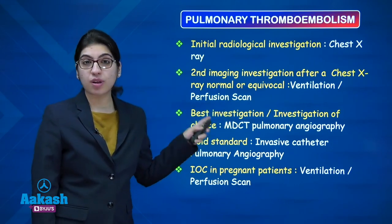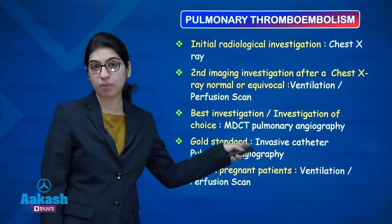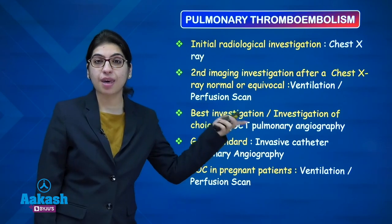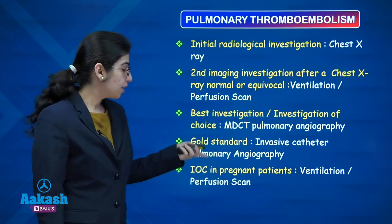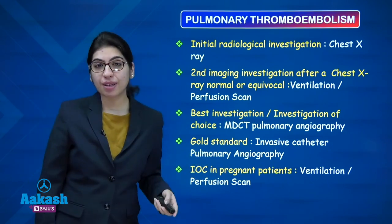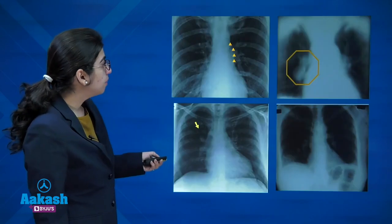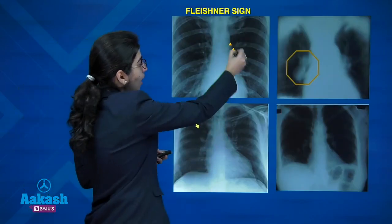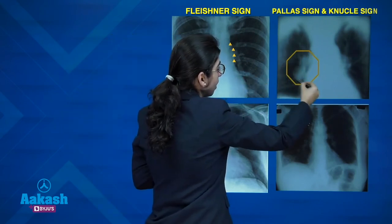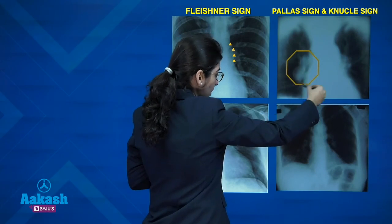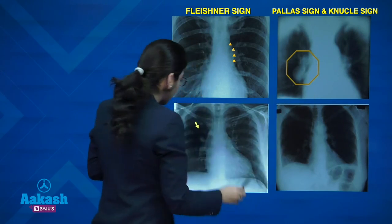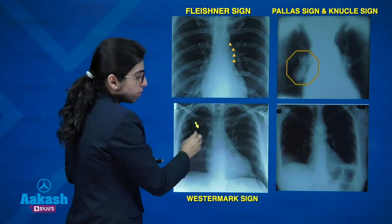The best investigation for pulmonary thromboembolism is multi-detector CT pulmonary angiography. The gold standard is invasive catheter pulmonary angiography using digital subtraction angiography. In pregnant patients, the investigation of choice is the ventilation-perfusion scan. Signs on imaging: enlarged central pulmonary artery — Fleischner sign; enlarged sausage-shaped descending pulmonary artery with abrupt cut-off — Palla's sign or knuckle/Chang sign; focal area of oligaemia — Westermark sign; and wedge-shaped infarct — Hampton's hump sign.